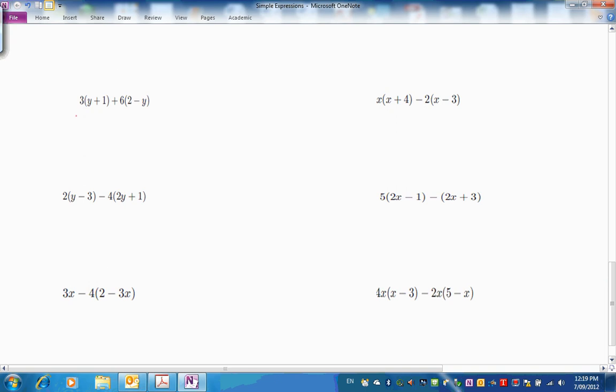Alright, we're back now. Let's start over here. Here we go. 3 times y is 3y, plus 3 times 1 is 3. Let's do the second bracket. Plus 6 times 2 is 12. And 6 times negative, oh, positive times negative, is a negative 6y.